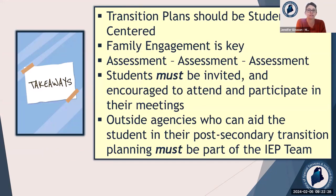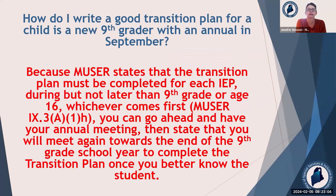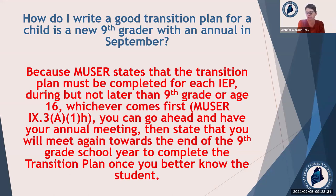Some general thoughts: transition plans should be student-centered. Family engagement is super important. Do those assessments — have the student do them to help figure out what they want to do and what they're able to do. Students must be invited and encouraged to attend and participate in their meetings, and outside agencies must also be invited to be part of the IEP team. If you get a new ninth grader and their annual is in September and you don't know this kid, you do not have to do the transition plan in September — it has to be during that ninth grade year. Schedule a meeting later in the school year; that gives you time to do transition assessments, get to know the student, and have a separate transition meeting.